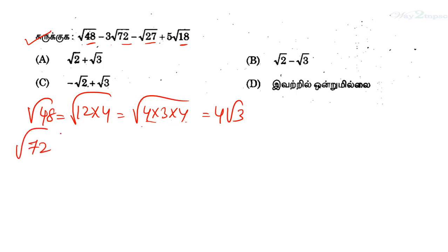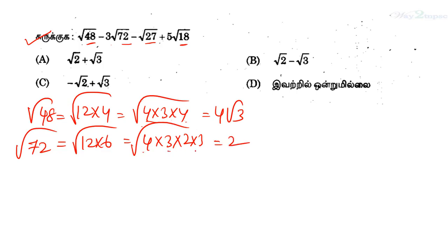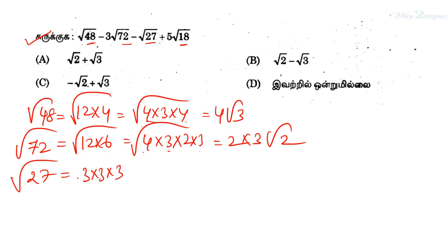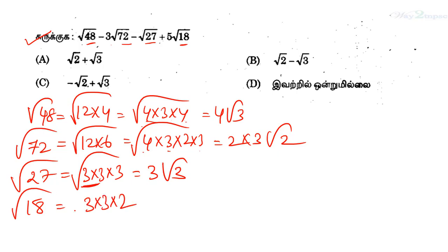For root 72, this has a factor of 3. We take 72 as 4 times 2 times 3 times 3, so we get 6 root 2. Then 3 into 3 into 2, giving us 2 root 2 terms.